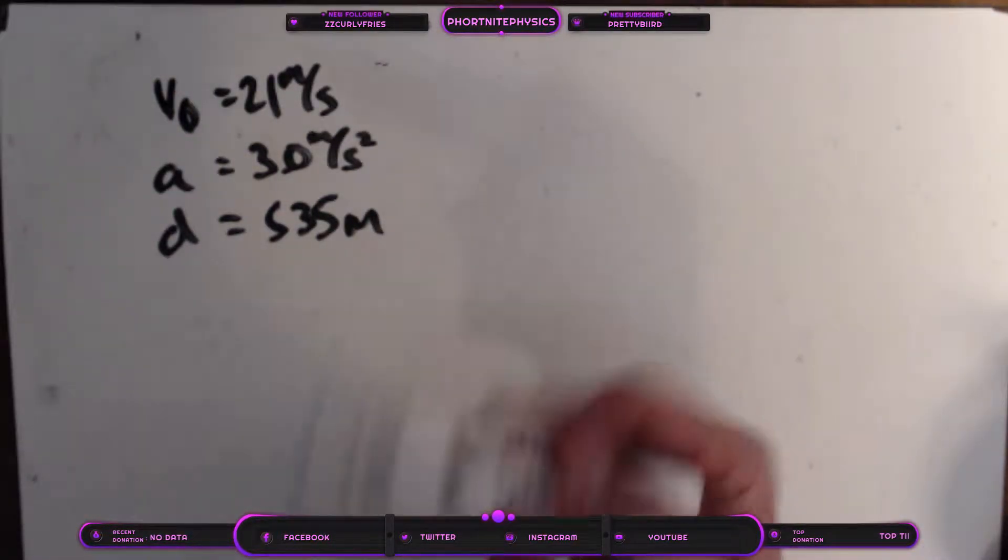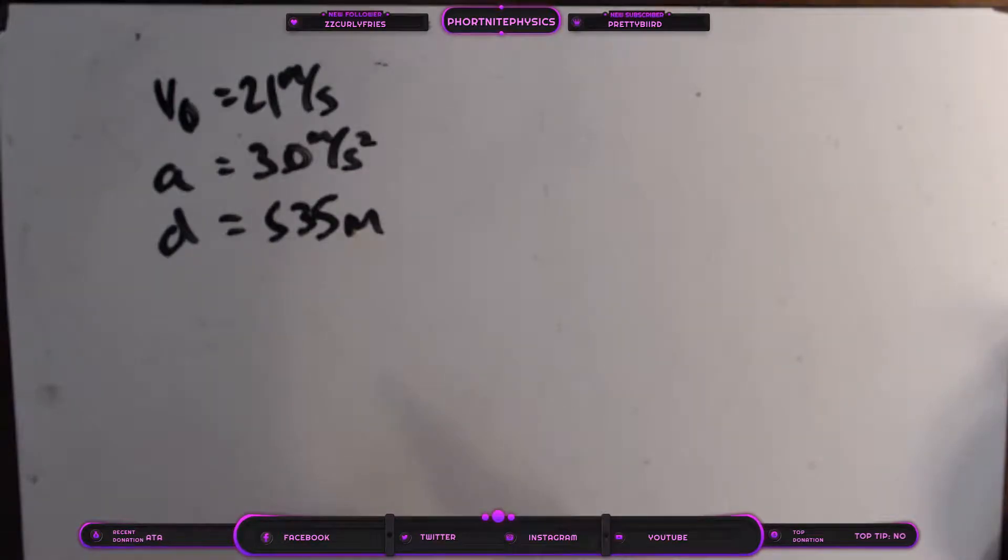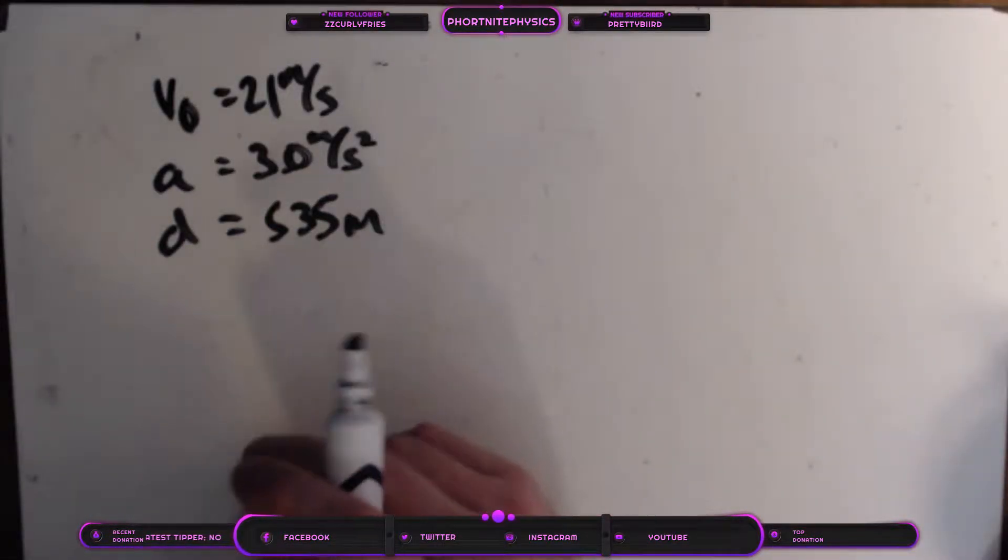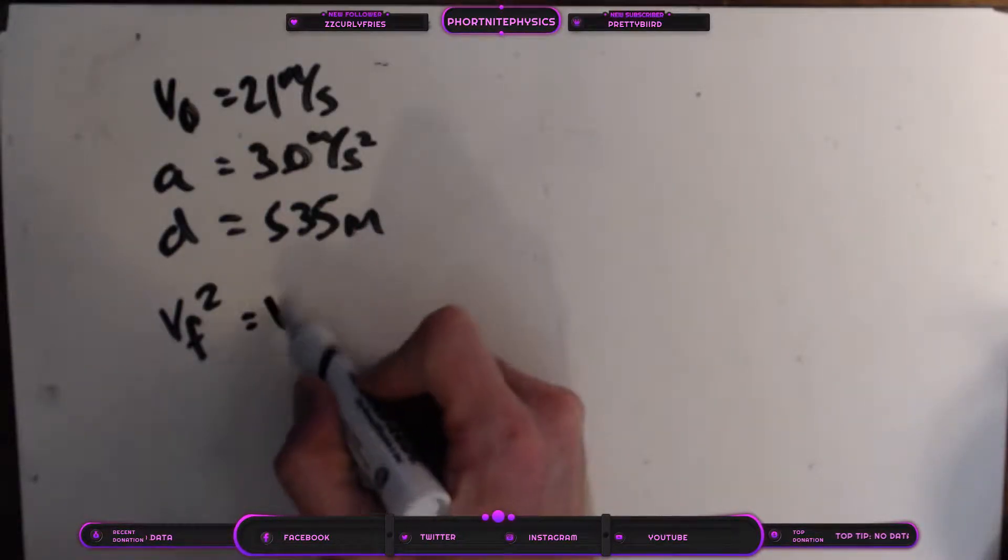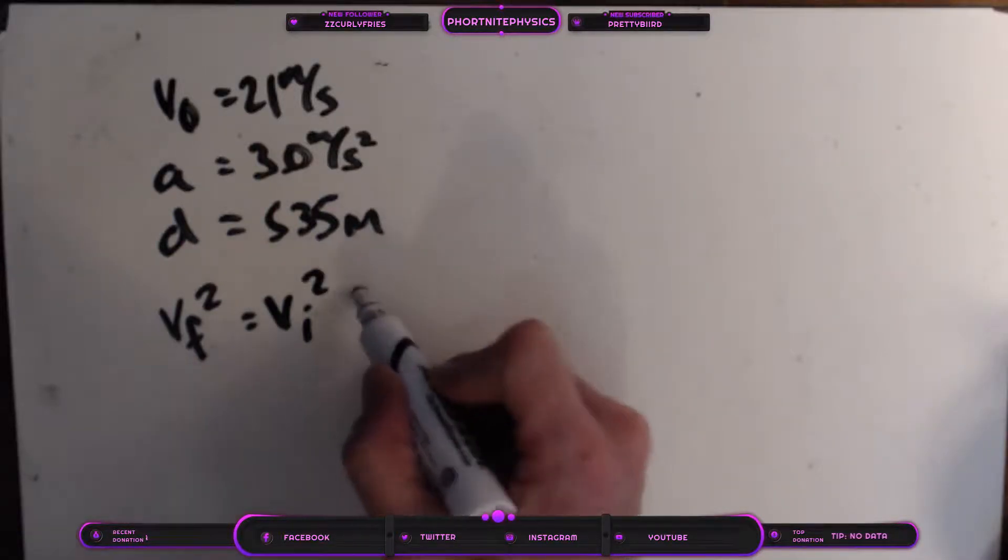All right, so there we go. We have all of our stuff. Okay, now this is a variation on the equations that I've been using before, but trust me on this one: VF squared equals VI squared plus 2AD.